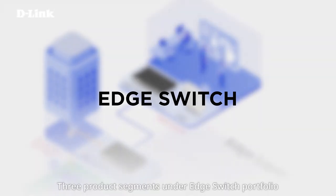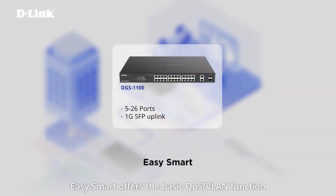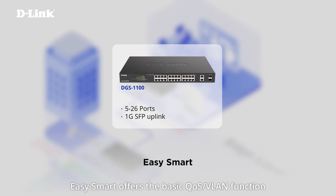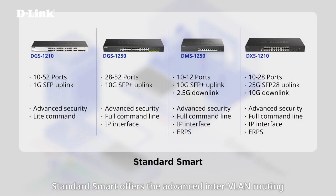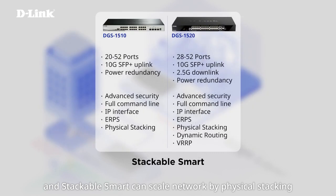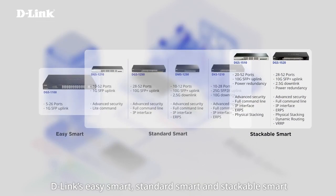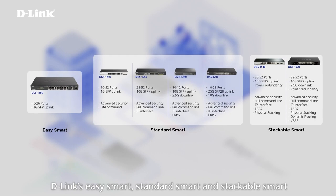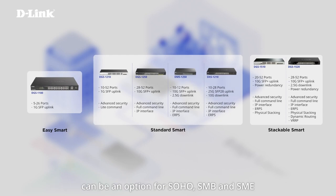Three product segments under the Edge Switch portfolio: Easy Smart offers the basic QoS VLAN function, Standard Smart offers advanced inter-VLAN routing, and Stackable Smart can scale the network by physical stacking. D-Link's Easy Smart, Standard Smart, and Stackable Smart can be an option for SOHO, SMB, and SME.